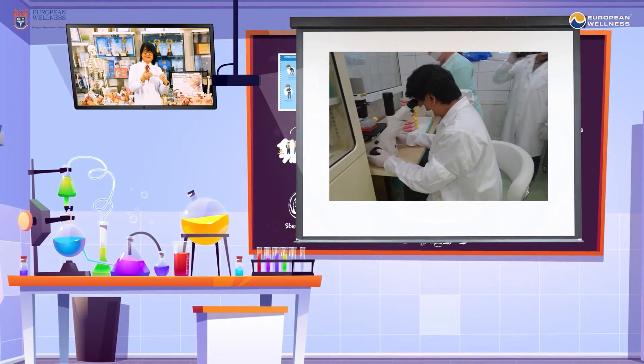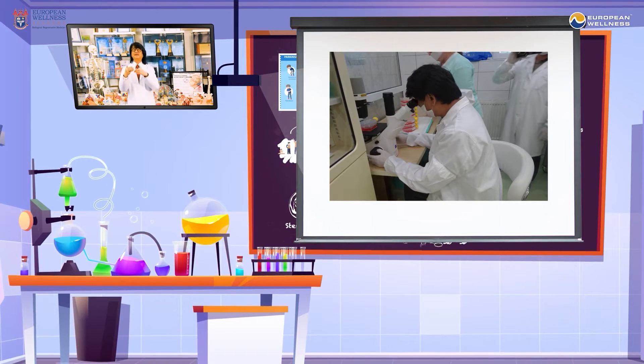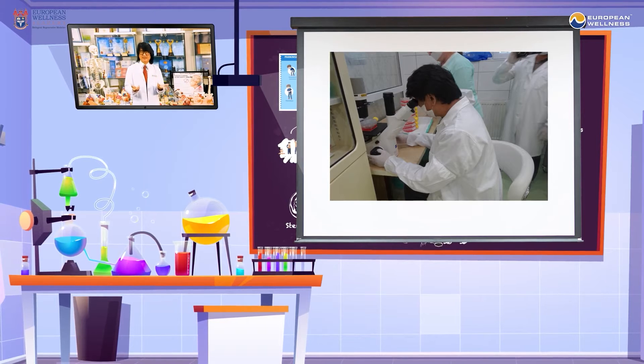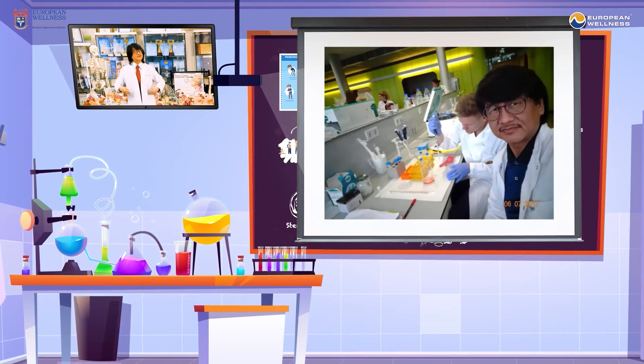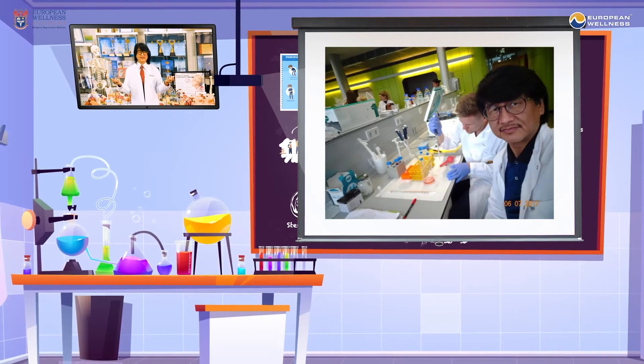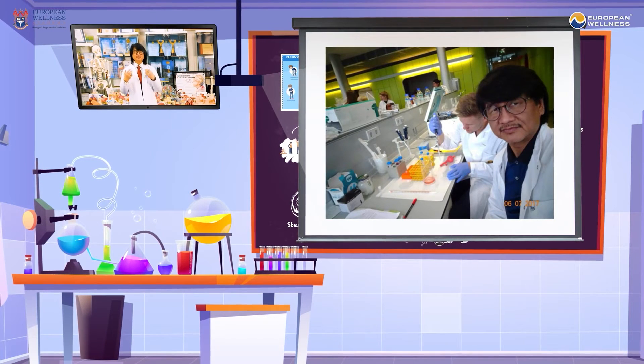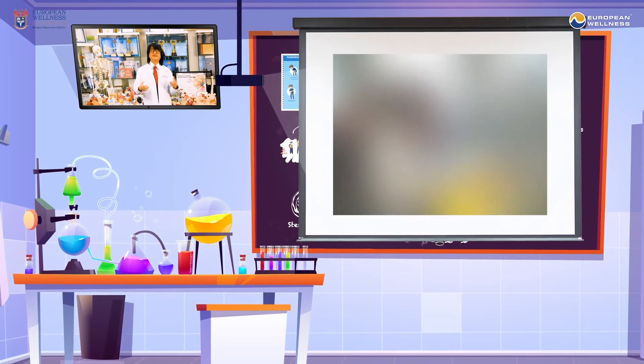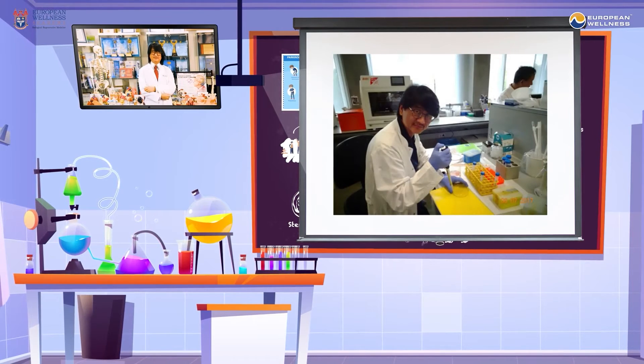On top of that, autologous cells are not zero-age cells. Our cells are as old as our aging organs biologically and not chronologically. So the solution comes in a form of xenogenic cell preparation.